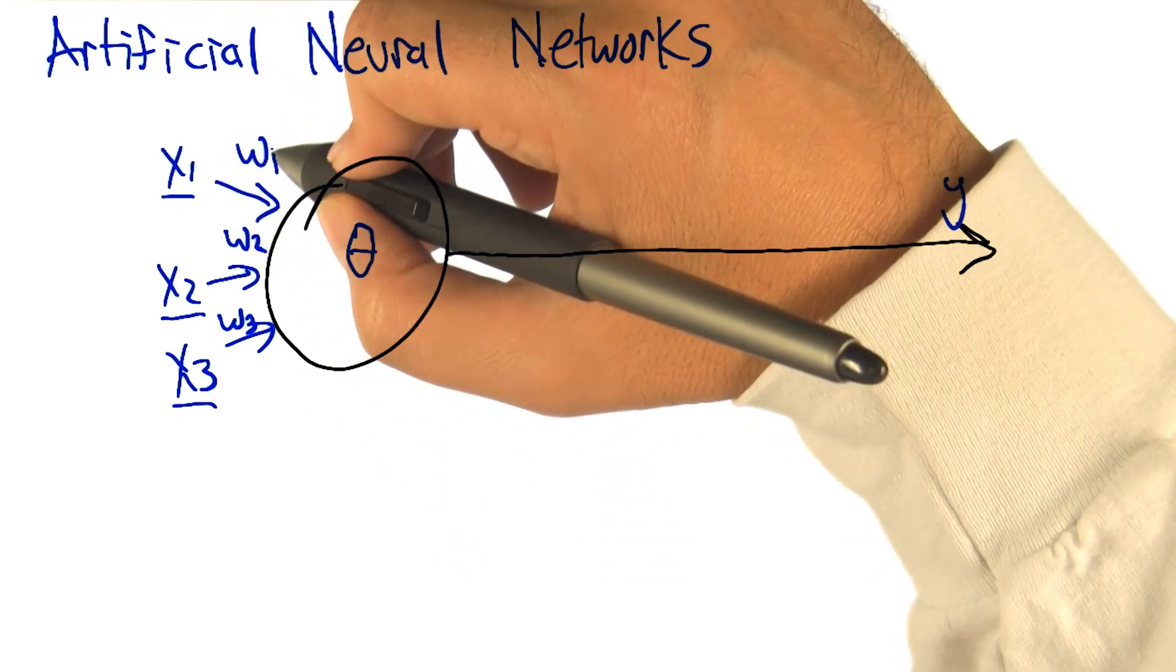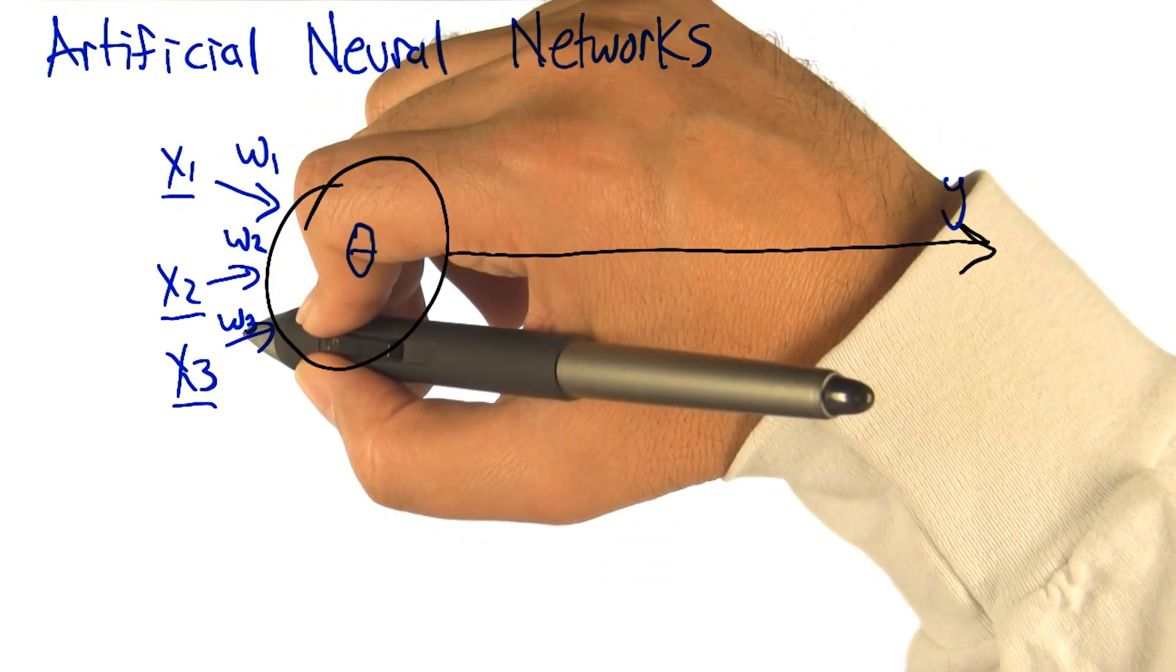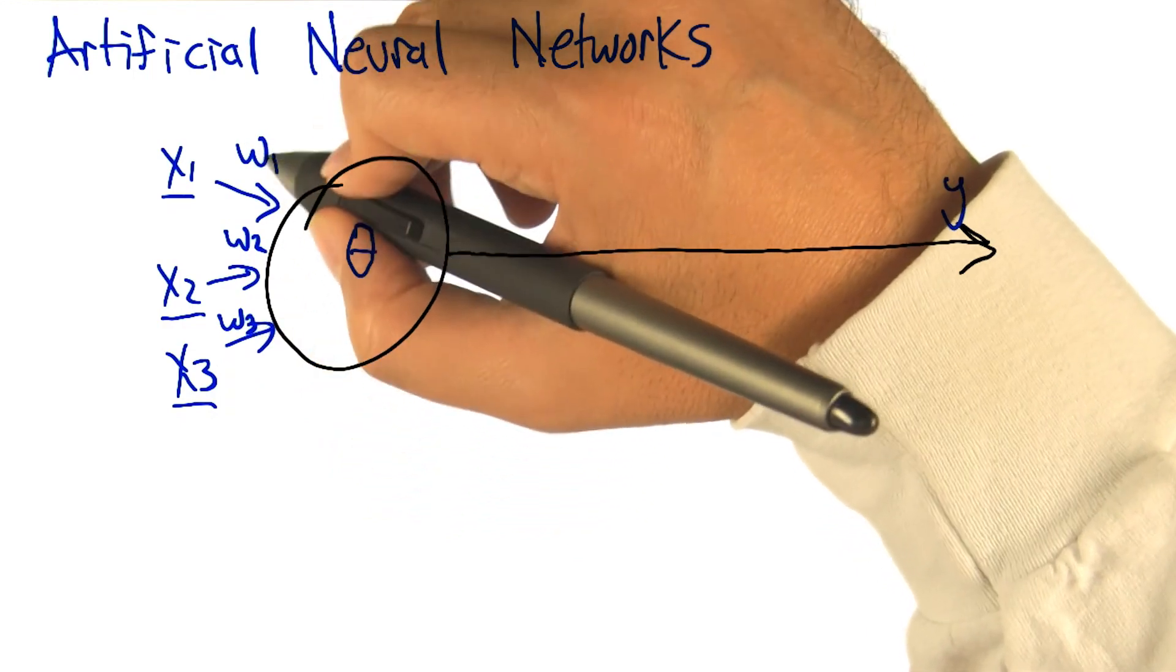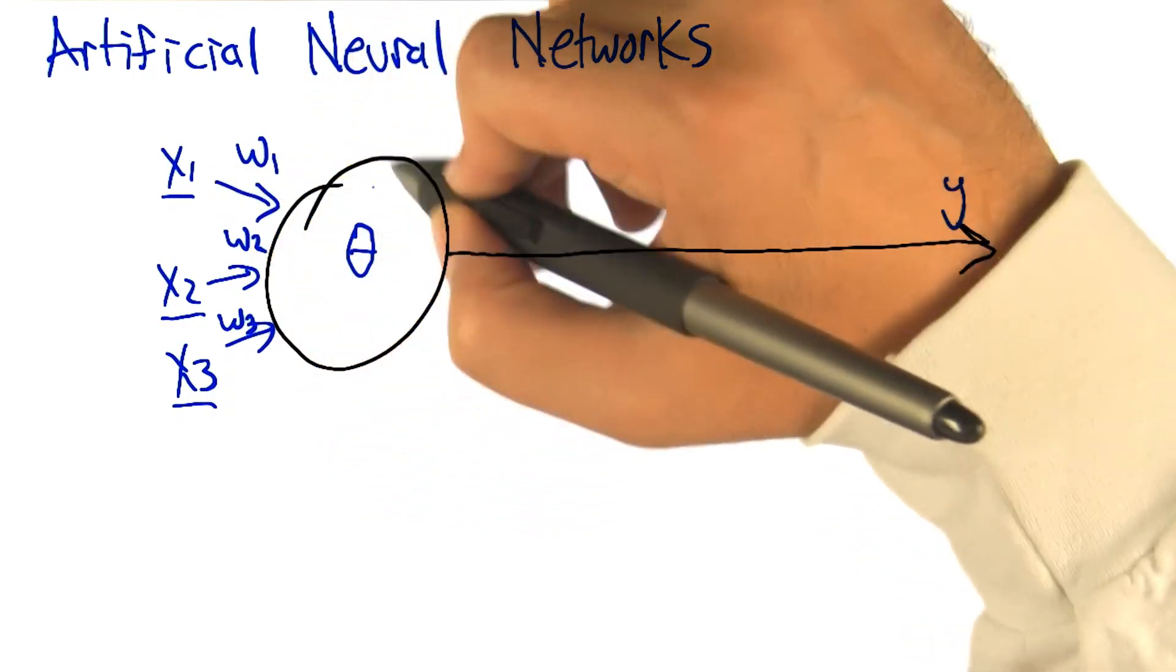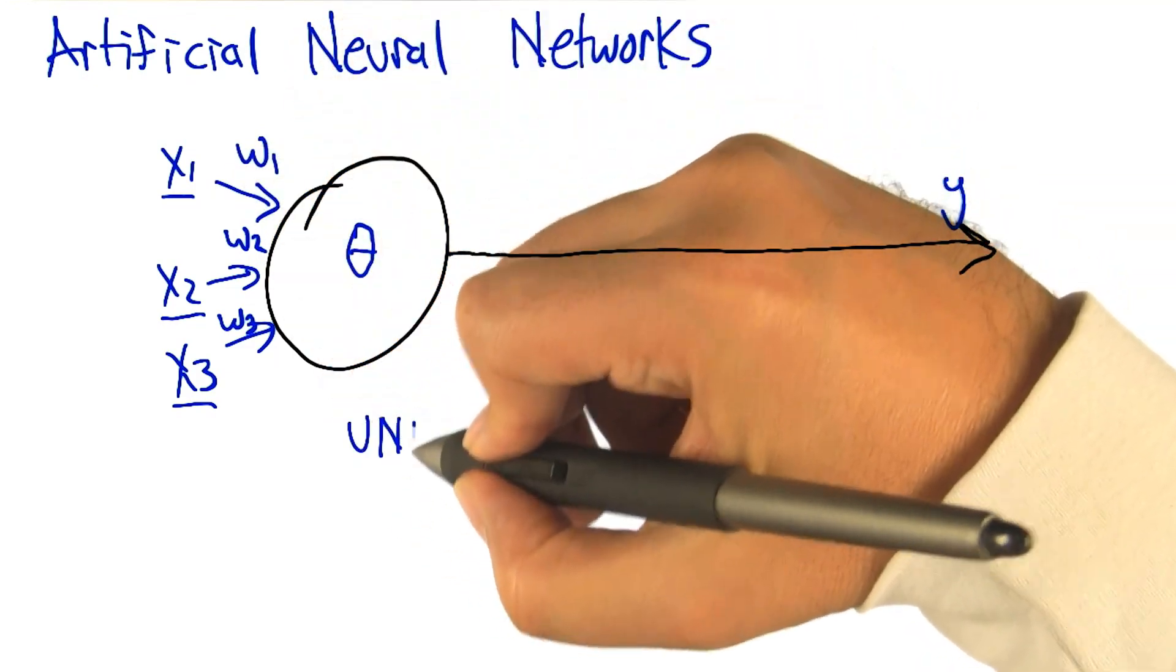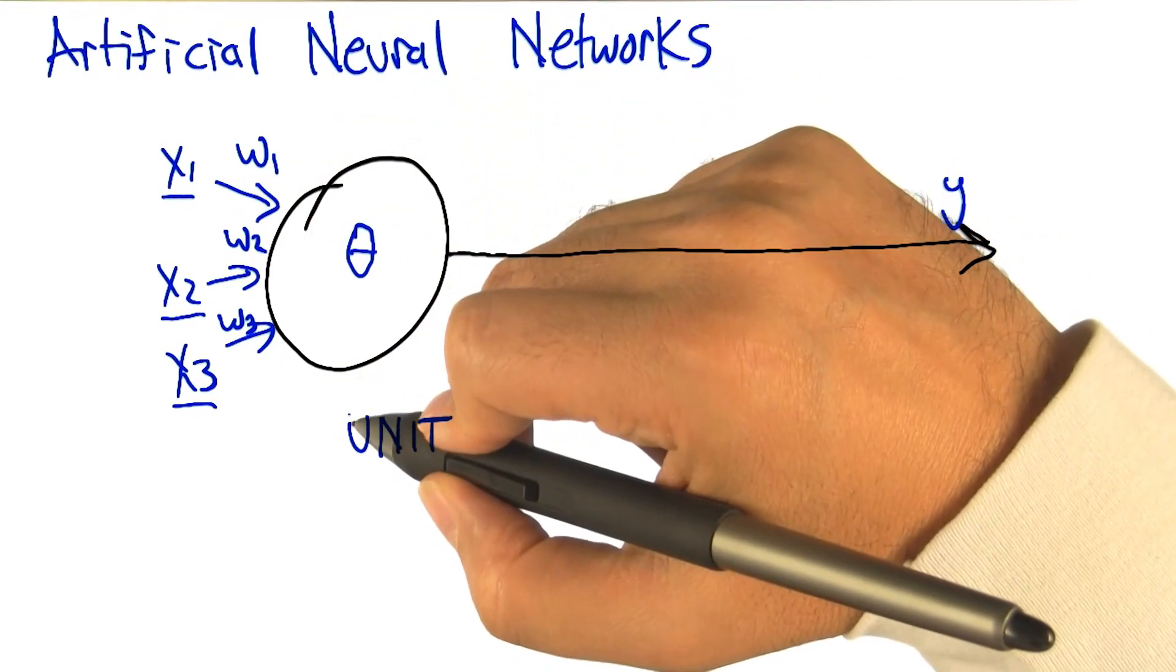Those are multiplied by weights, w1, w2, w3, correspondingly. And so the weights kind of turn up the gain or the sensitivity of the neuron, this unit, to each of the inputs, respectively.